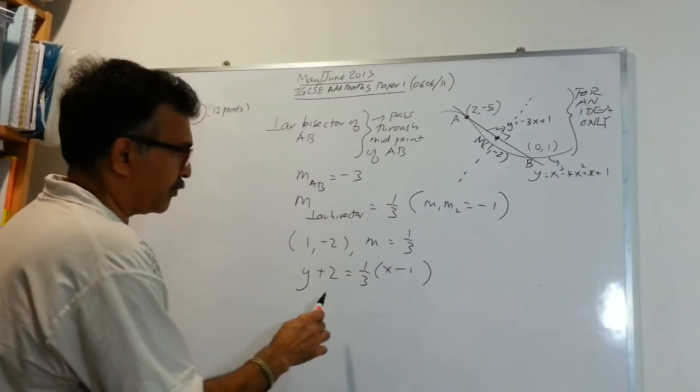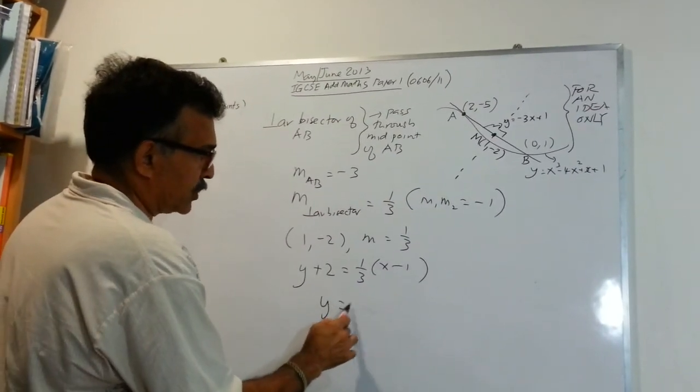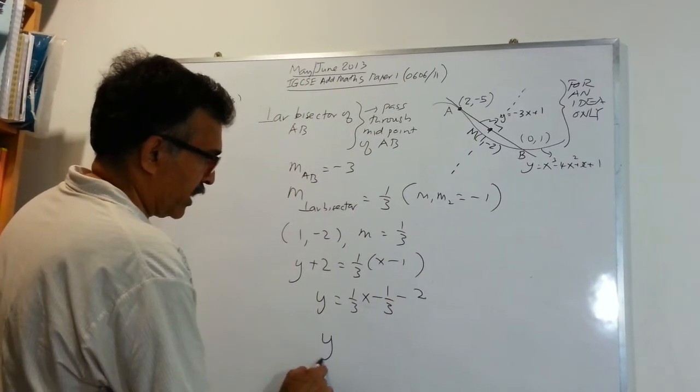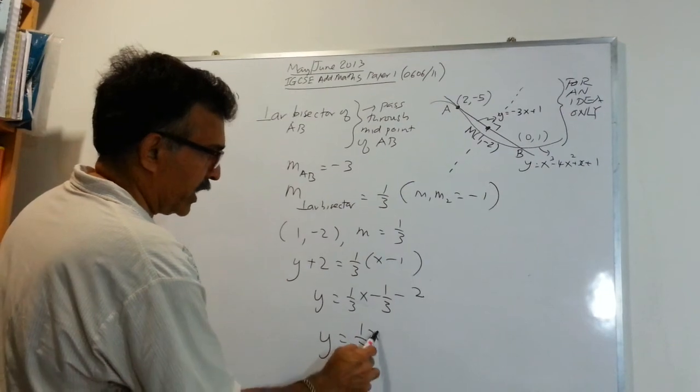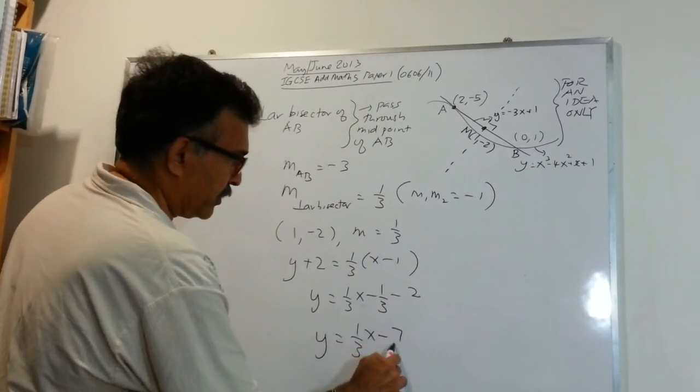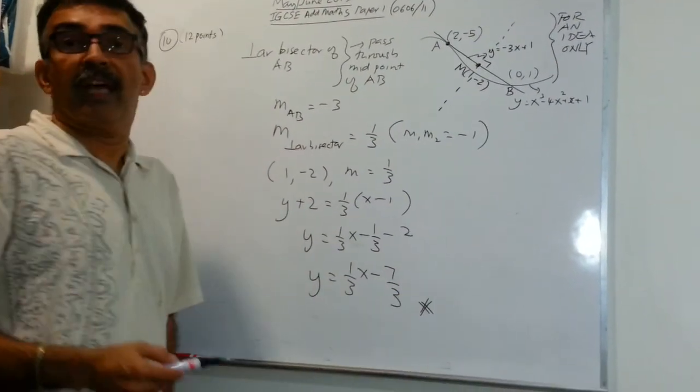We need to clean this up. You will get y equals 1 over 3x minus 1 over 3 minus 2. And, you will get y equals 1 over 3x minus 3 minus 2 minus 6. So, you will get minus 7 over 3. And, we are done.